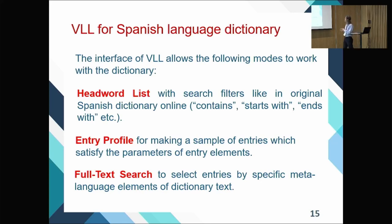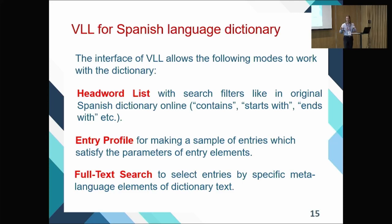The current interface allows you to work on the level of the headword list, the entry profile, and to do full text searches. Headword list search filters include: something contains, starts with, or ends with something — typical Boolean searches. The entry profile is for making a sample of entries which satisfy parameters of entry elements, and full text search selects entries by specific meta-language elements of dictionary text.